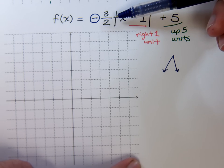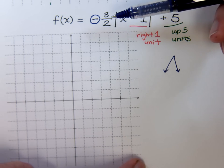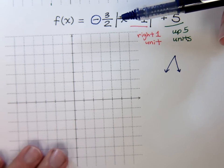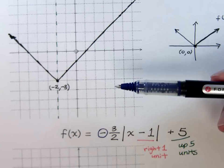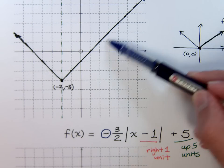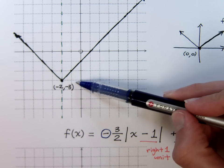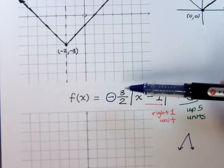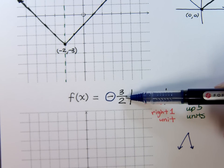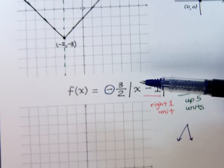And the three halves here gives me some kind of idea about how steep it's going to be. It's larger than one so it should be a little bit steeper than the normal absolute value guide, like the one that we graphed in our last video right here. This is a nice slope of one. It's got a nice 45 degree angle to it. So the three halves means it's going to be a little bit steeper than that.